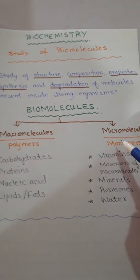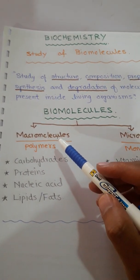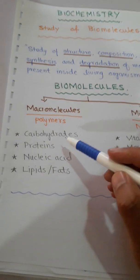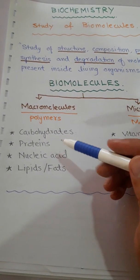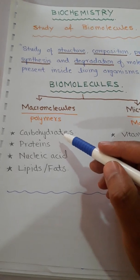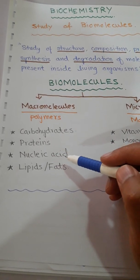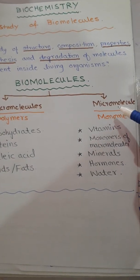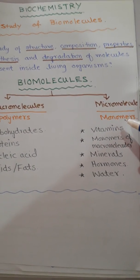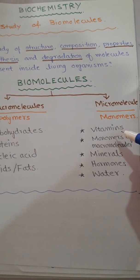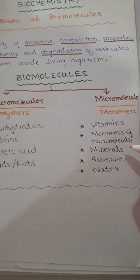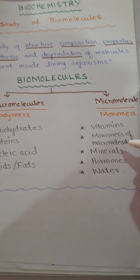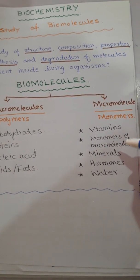Macromolecules are the polymers of small molecules. By carbohydrates we mean polysaccharides. Macromolecules include carbohydrates, proteins, nucleic acids, lipids, and fats. Micromolecules are the monomers of macromolecules — such as amino acids, sugars, monosaccharides, glycerols, and fatty acids.